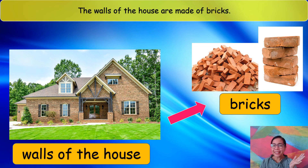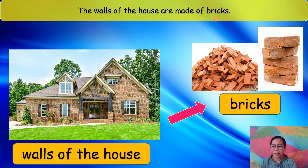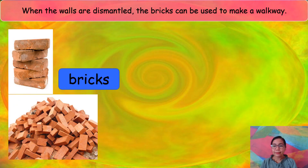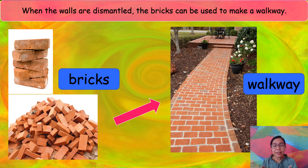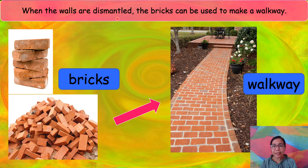Let's have another example. This is a house. There are many materials that make up a house, but the walls of this house are made up of bricks. The walls of the house are made of bricks. When the walls are dismantled — meaning you take the bricks out one by one and reuse them to form a new object — you can make a walkway. When the walls are dismantled, the bricks can be used to make a walkway.